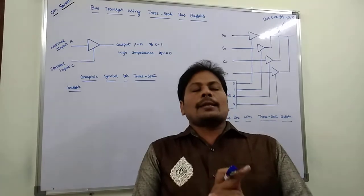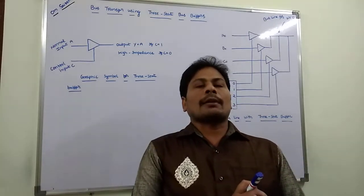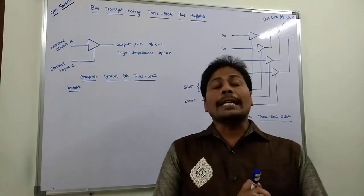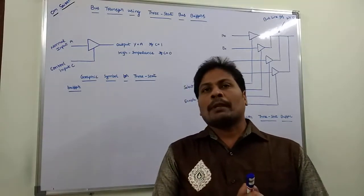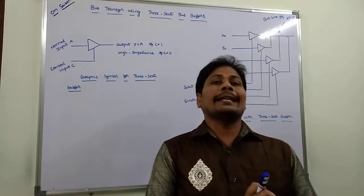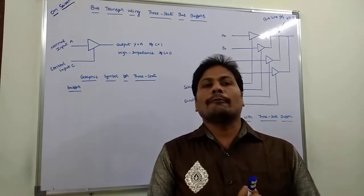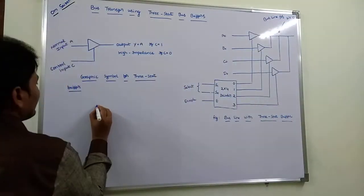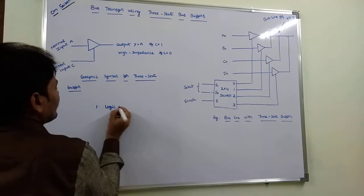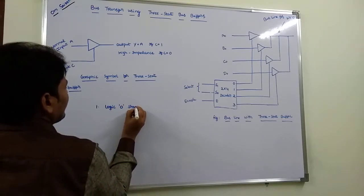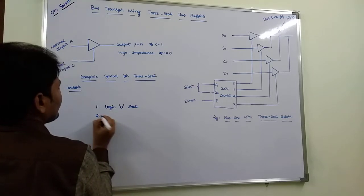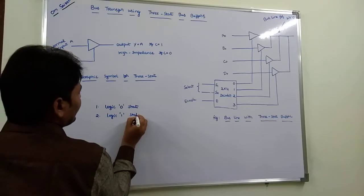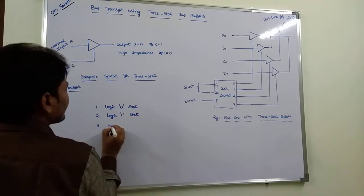A bus system can be constructed using three-state buffers instead of multiplexers. A three-state buffer is a digital circuit which exhibits three states: the first is logic zero state, the second is logic one state, and the third is high impedance state.